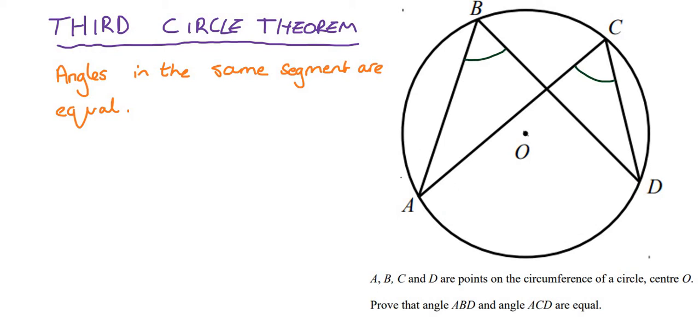Okay, so how do we go about proving this? Well, as is usual with these circle theorems, we draw radii. So let's draw one from A to O, and one from O to D.